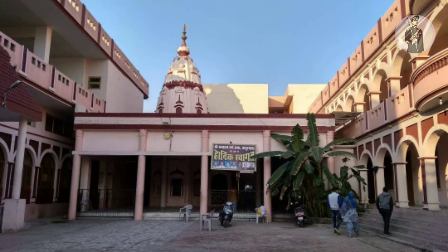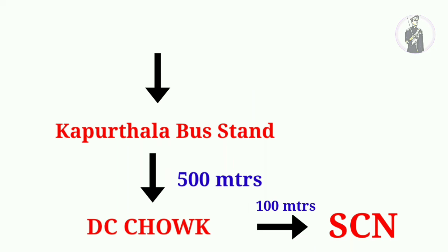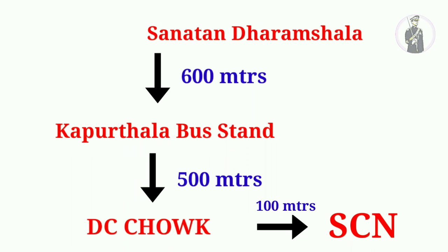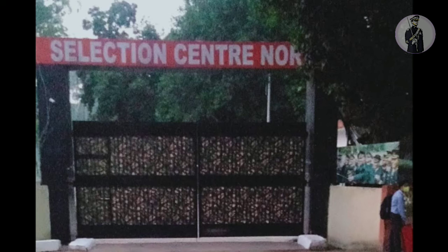To reach the dharamshala, the distance from Kapoor Thala bus stand is only 600 meters. You can ask any local person or shopkeeper how to reach Sanatan Dharamshala and they will guide you. It will take only 5 to 7 minutes — it is on the right side, and a photo of the dharamshala is shown on screen. In every SSB at Kapoor Thala I always preferred to stay at the dharamshala.